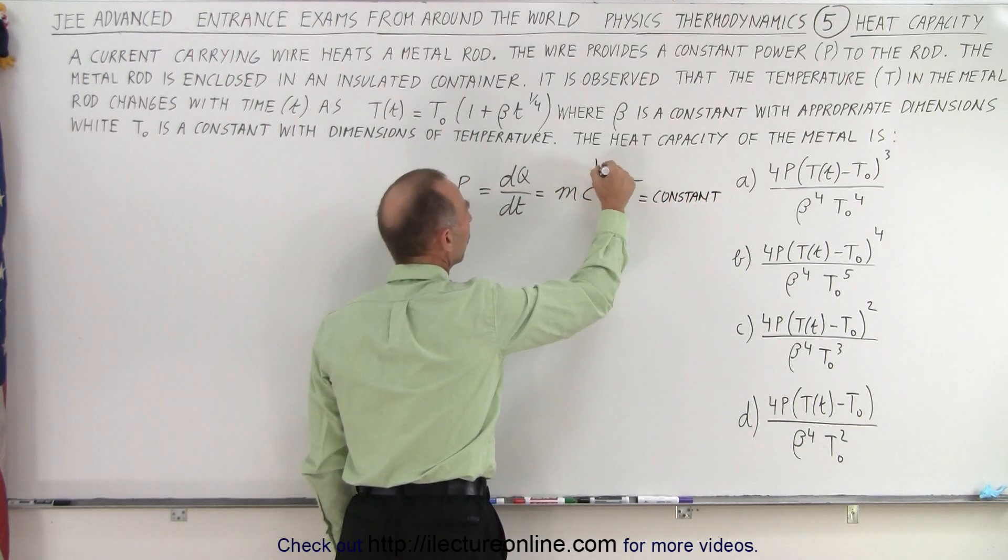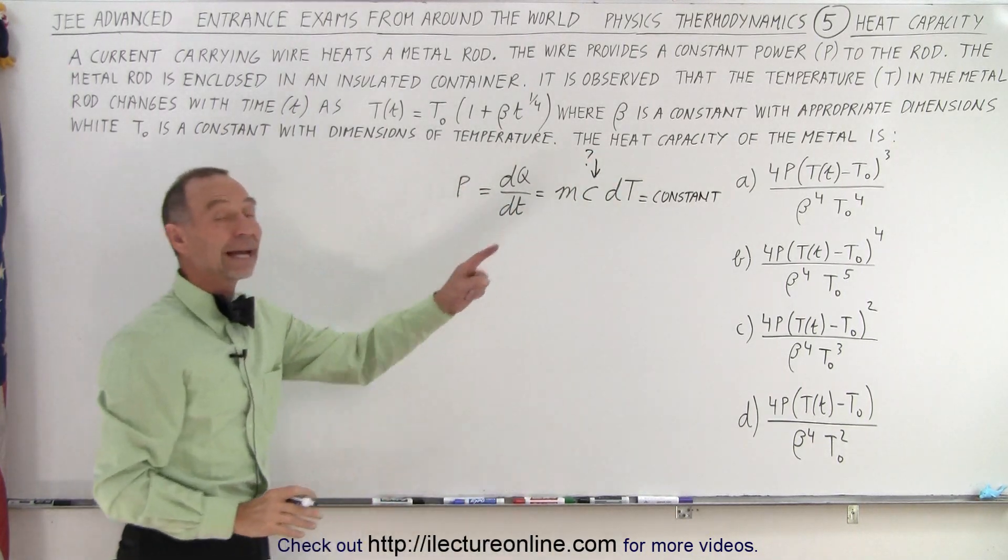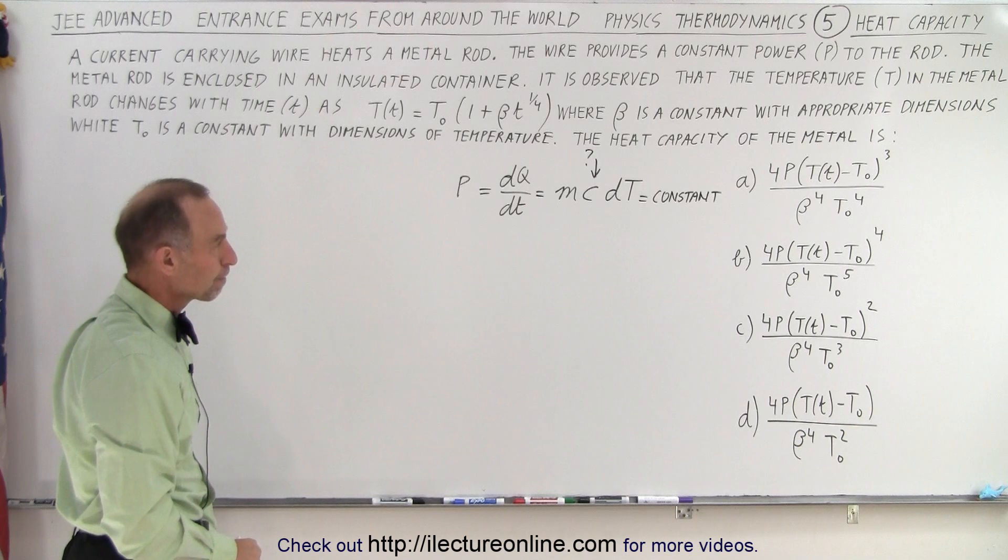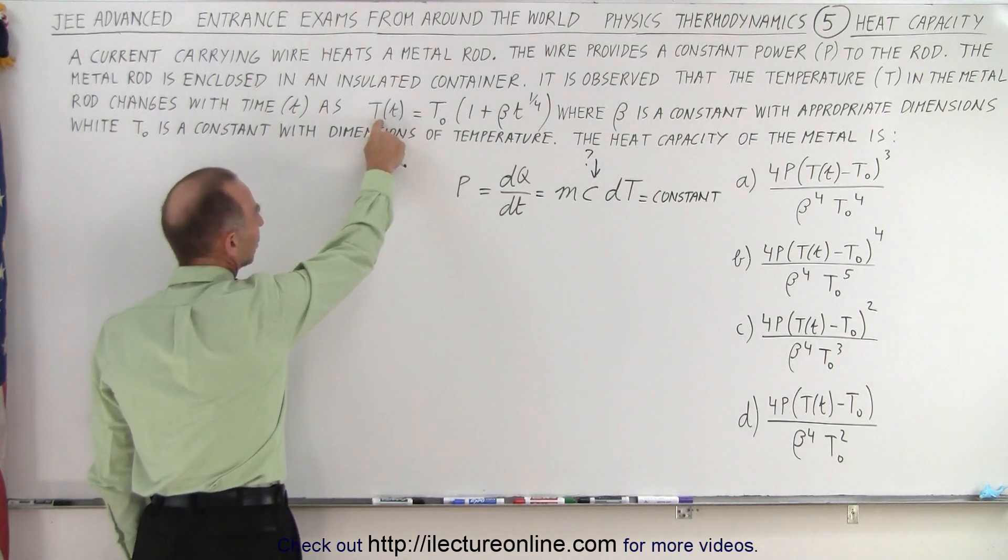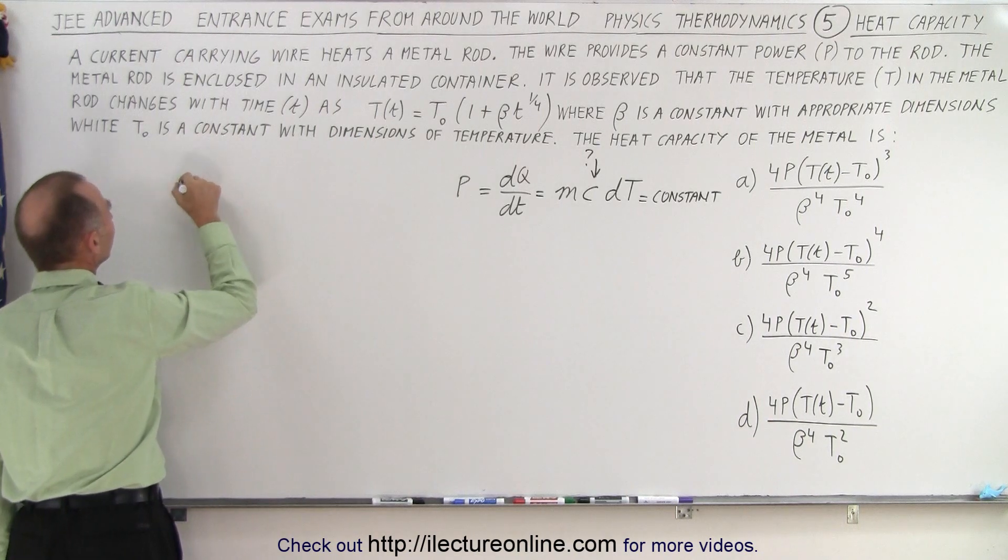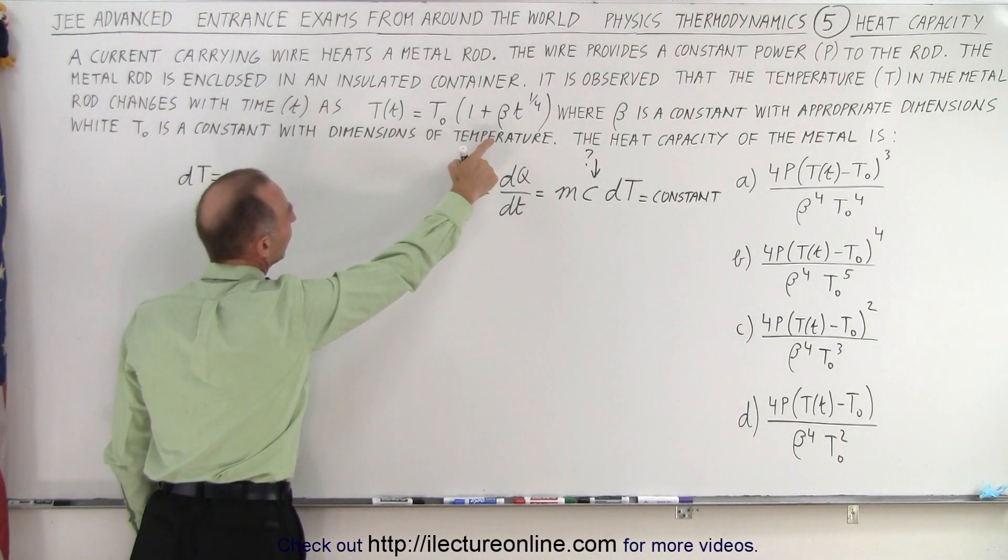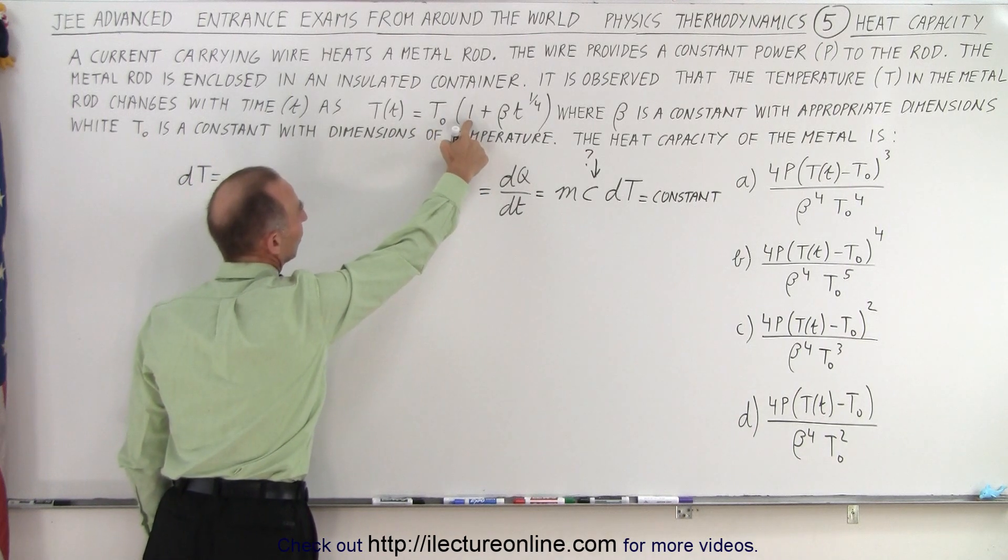And so they want to know what c is equal to of this rod to make that a constant. And they give us the temperature here, so let's take the differential of that. So if T is equal to that, then dT is equal to the derivative of that with respect to time. Notice that this is a constant, so that goes to zero.